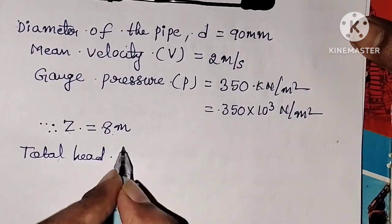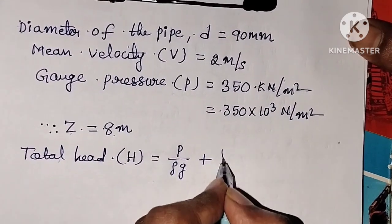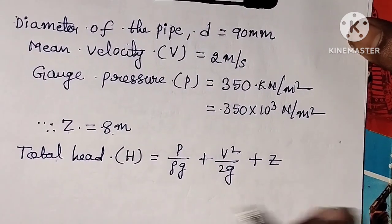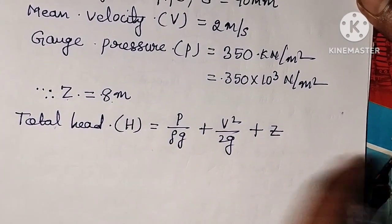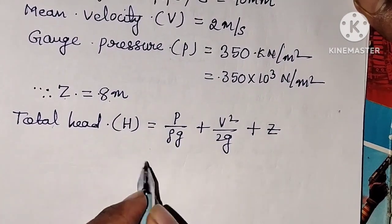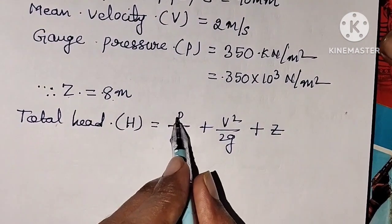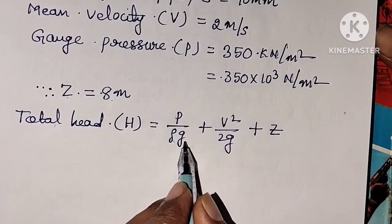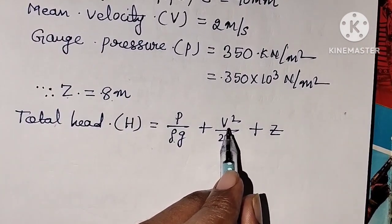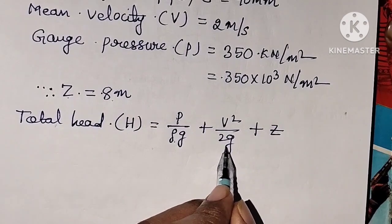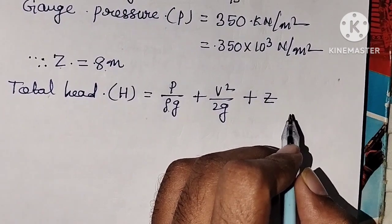So, total head H is equal to P by rho-G plus V square by 2G plus Z. Here we are using Bernoulli's principle. P is called gauge pressure, rho is called density of water, G is acceleration due to gravity, V is mean velocity, and Z is height of the pipe from the ground.